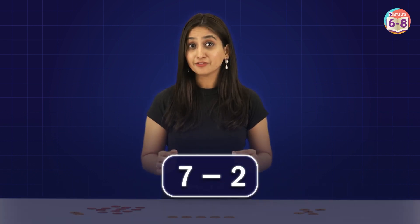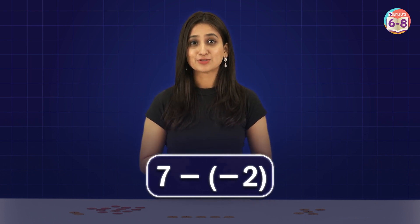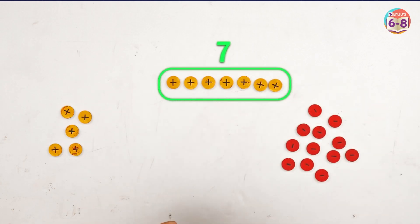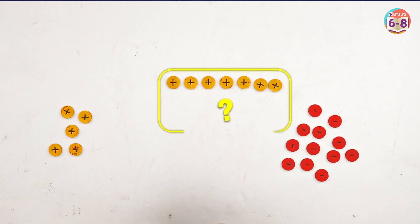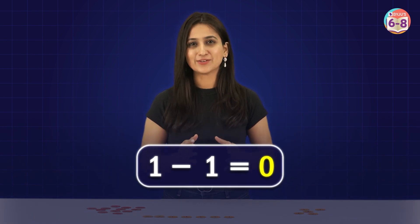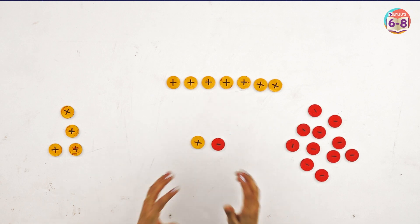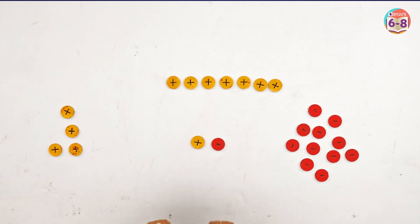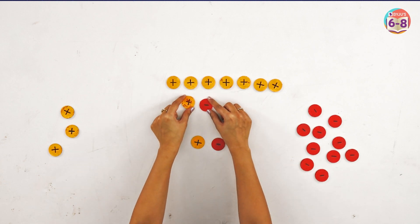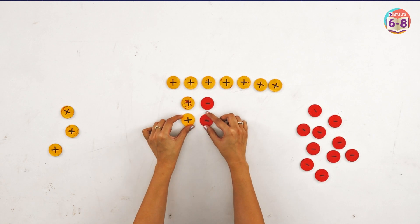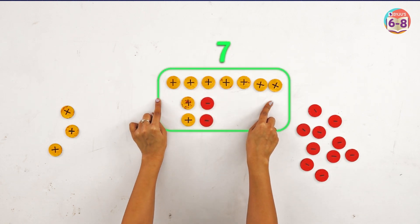Now what if we change it to seven minus minus two? We again take seven positive chips. But how do we remove two negative chips when there aren't any on the table? We bring back what we learned previously — one minus one is zero — so if we add a positive chip and a negative chip, we get zero. Keeping that in mind, let's add one more set of a positive and a negative chip.